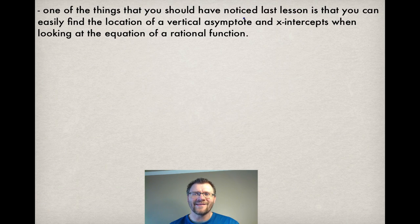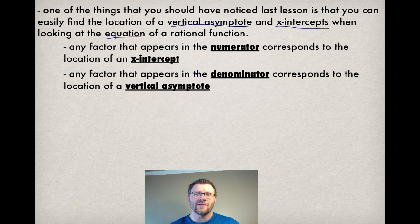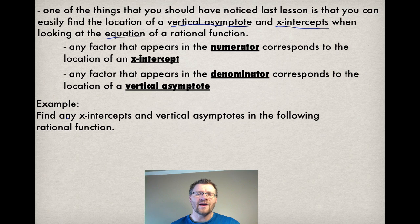One of the things you should have noticed last lesson is that you can easily find the location of a vertical asymptote and an x-intercept by looking at the equation of a rational function. For example, any factor that appeared in the numerator corresponds to the location of an x-intercept, where any factor that appeared in the denominator corresponds to the location of a vertical asymptote. We're going to find any x-intercepts and vertical asymptotes in the following rational function.